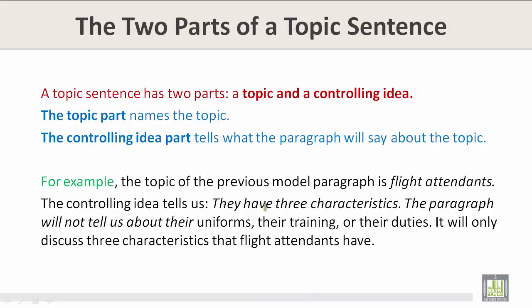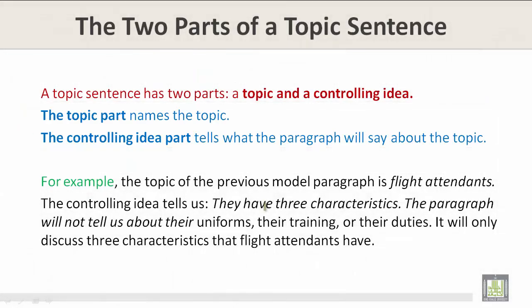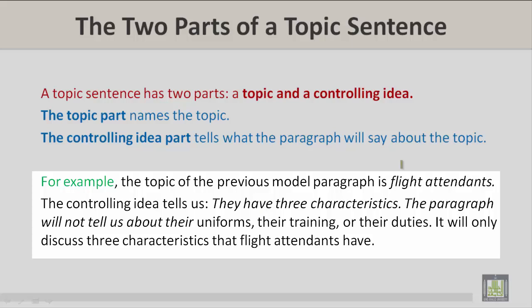A topic sentence has two parts: a topic and a controlling idea. The topic part names the topic, and the controlling idea part tells what the paragraph will say about the topic. For example, the topic of the previous model paragraph is flight attendants, and the controlling idea tells us they have three characteristics.